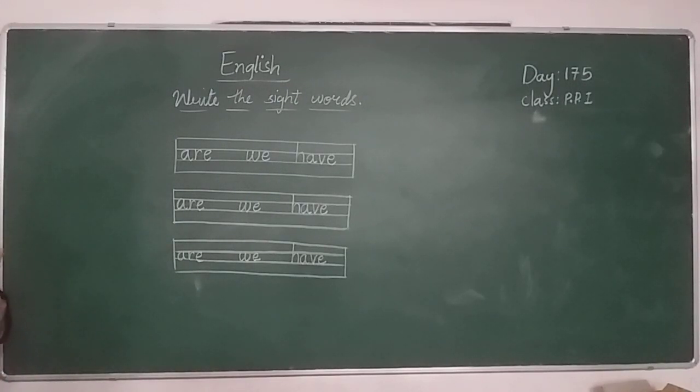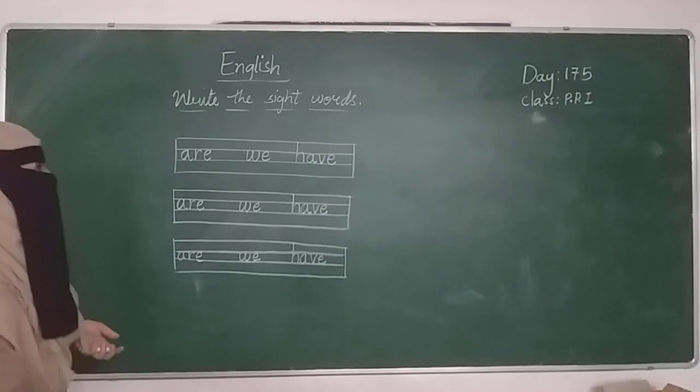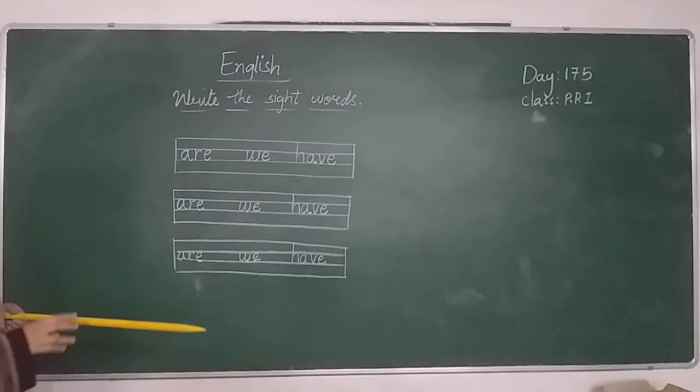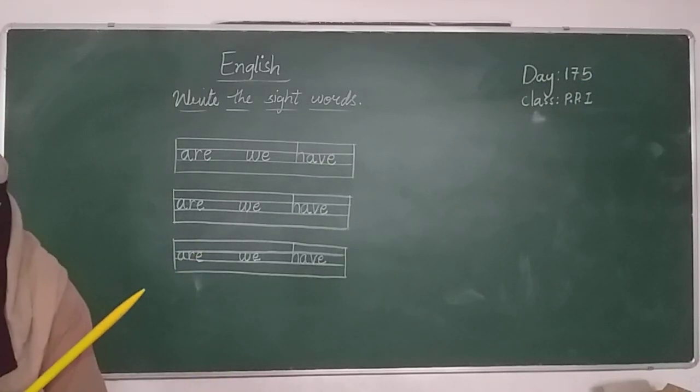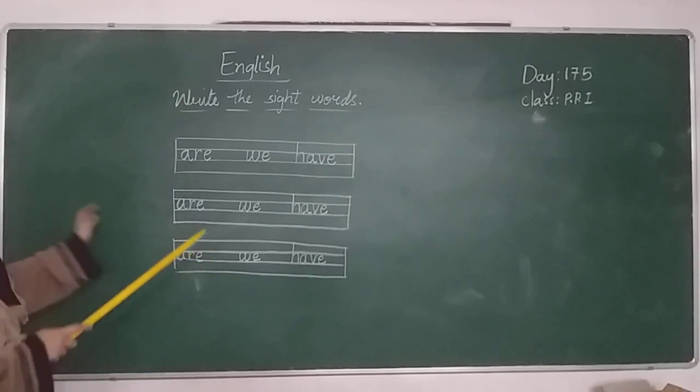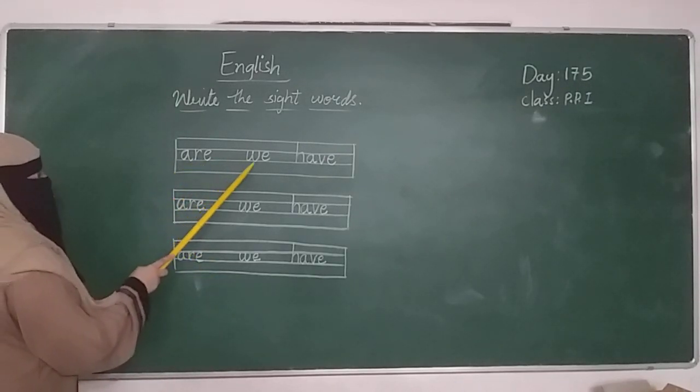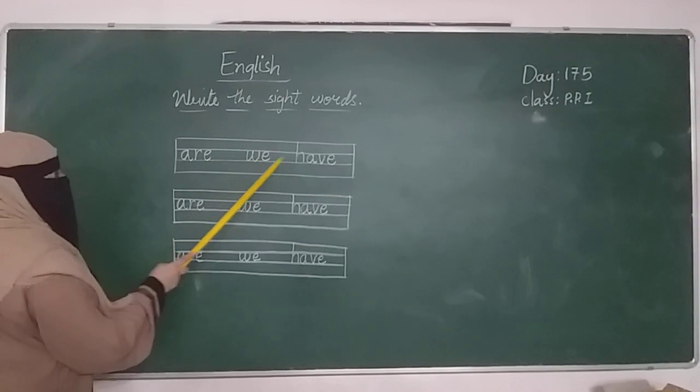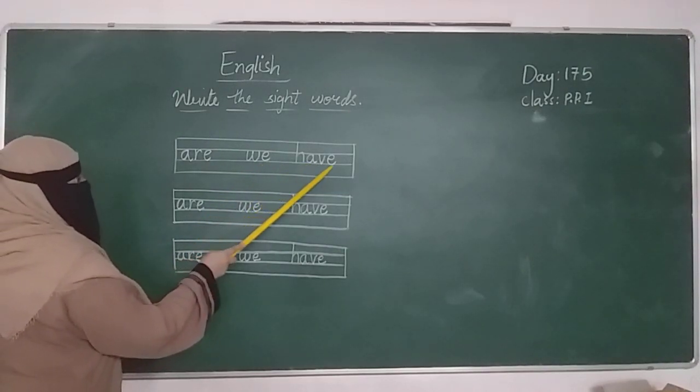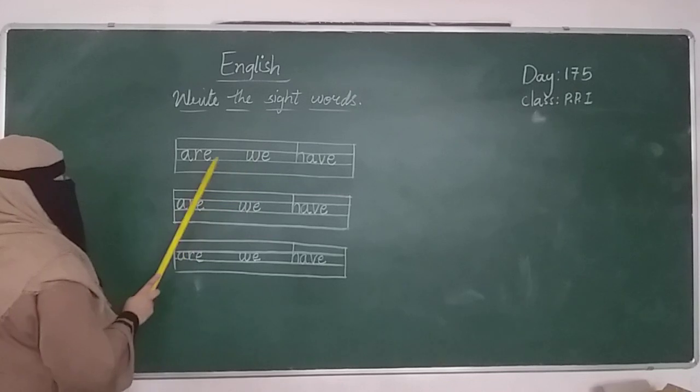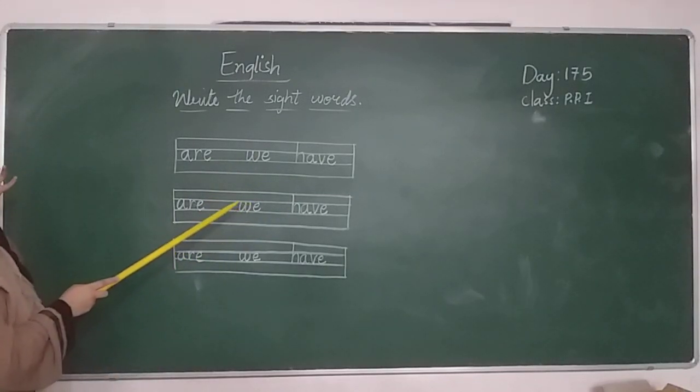So these are the sight words. In our previous video also we have learned many sight words like T, H, E - the. And what else? A, R, E. Today we are learning these three new sight words: are, we, and have.